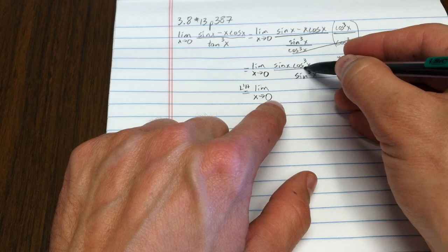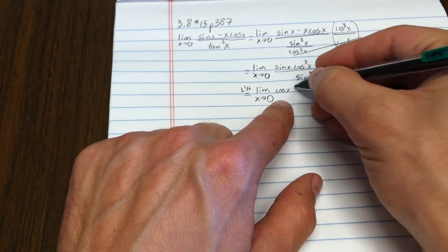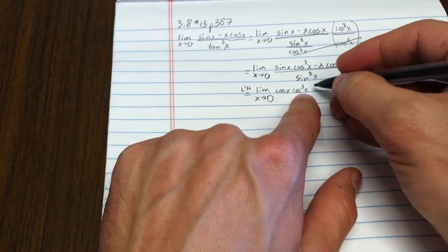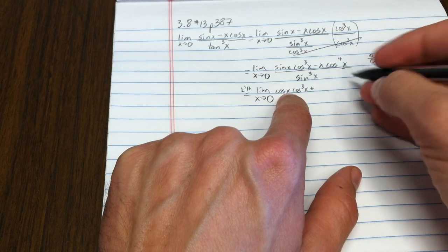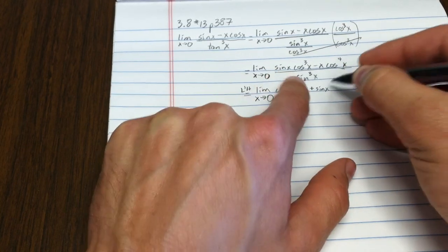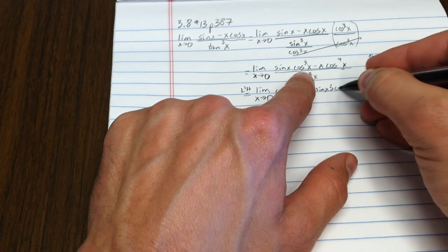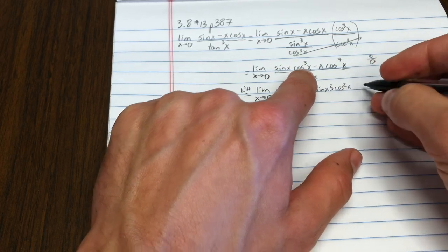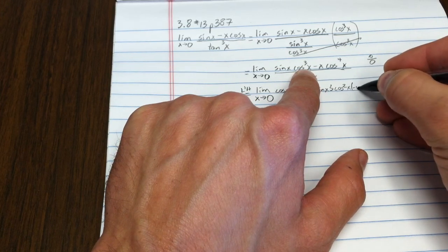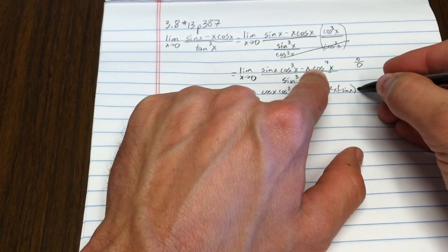I have to use the chain rule here, right? So the derivative of the first is cosine x times cosine cubed x. That'll be cosine to the fourth x, once I simplify, once I combine terms. Then leave the first alone. So sine x times 3 cosine squared x, using the chain rule on this cosine cubed, times negative sine x. That's all from this first term.